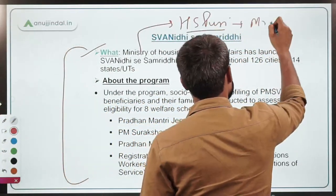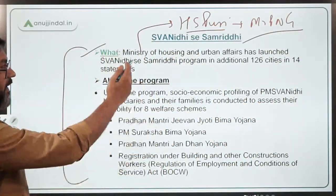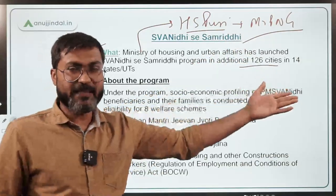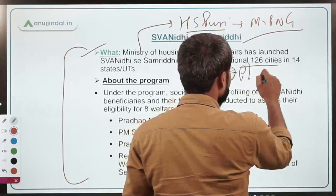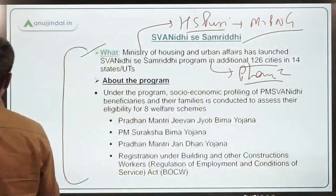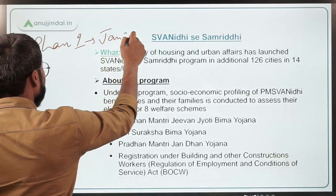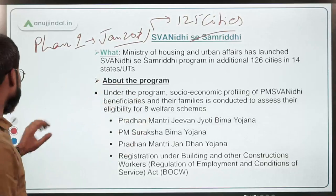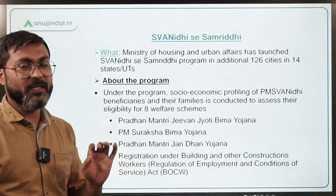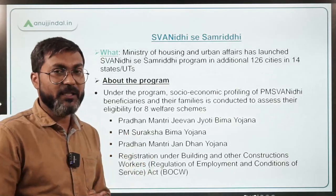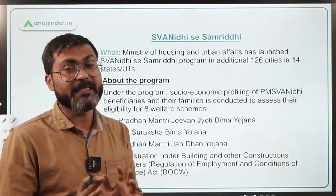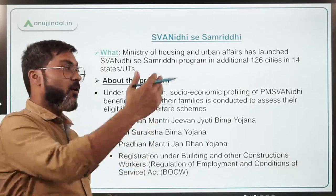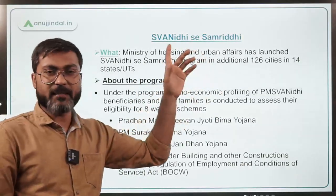The Ministry has launched Swanidhi se Samridhi program in an additional 126 cities across 14 states and UTs. This is phase two — phase one was launched in January 2021 in 125 cities. Under this program, the government identifies PM Swanidhi beneficiaries who are eligible to receive benefits of central government welfare schemes, and the identification of street vendors is done accordingly.